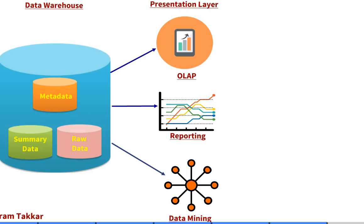The last part is data mining. Data mining is the process of discovering patterns from the data stored in the data warehouse. The overall goal is to extract information from a dataset and transform it into an understandable structure for further use. This information can be used to increase revenue, cut costs, or increase productivity. It also allows users to analyze data from many different dimensions, categorize it, and summarize identified relationships. Technically, data mining is a process of finding correlations or patterns among fields in a large relational database.